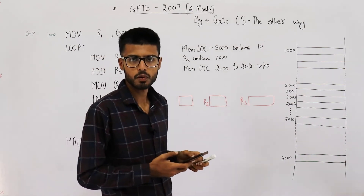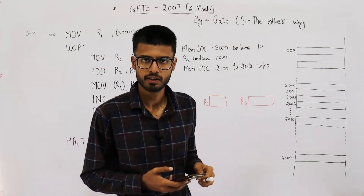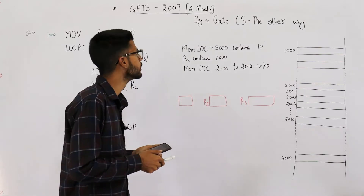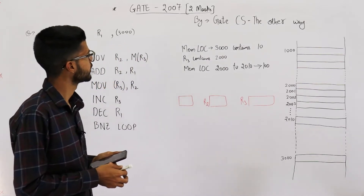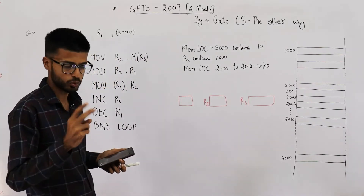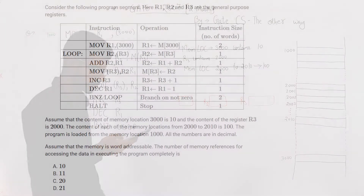Welcome. This question is from the GATE 2007 exam and it's a six-mark question. We have three parts, each part worth two marks. Let's read the statement.